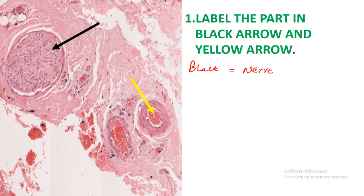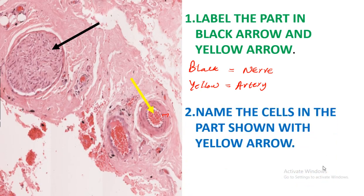When you talk of the yellow arrow, you need to be a little bit specific because in this case we have two blood vessels. One blood vessel is a little bit thick and has a small lumen, while the other one is thin and has a big lumen. So this is just an artery.